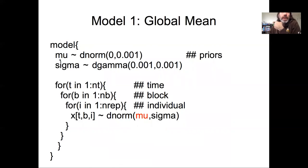Here we have, down in the likelihood, X, our observed data for a specific time, block, and individual, is normally distributed with mean mu and precision sigma, and then we put a prior on that mu and sigma. The only difference between this and the mean model we've looked at before is just in this case I happen to organize the data in an array by time, block, and individual.